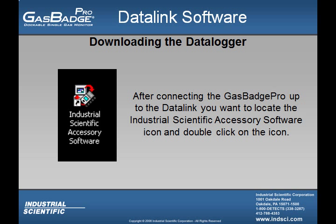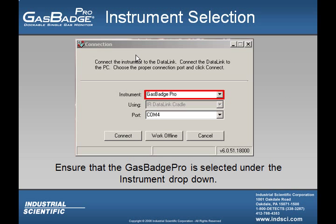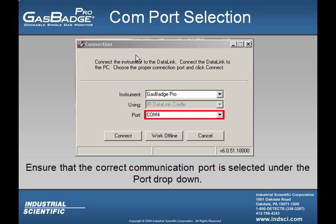After inserting the Gas Badge Pro into the Datalink accessory, the user must locate the Industrial Scientific Accessory Software icon and double-click on it. If the user cannot easily locate the icon, they can press the Start button, click on Programs, locate the Industrial Scientific Accessory Software tab, and click on it. Once the user has clicked on the icon, they want to double-check that the Gas Badge Pro is selected under the Instrument drop-down menu, as well as ensuring that the correct communications port is selected.